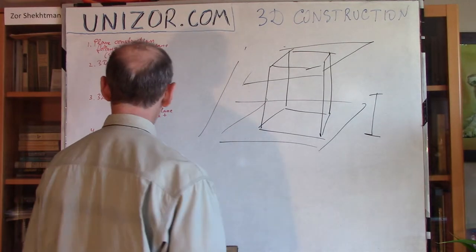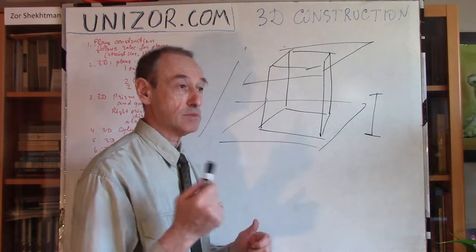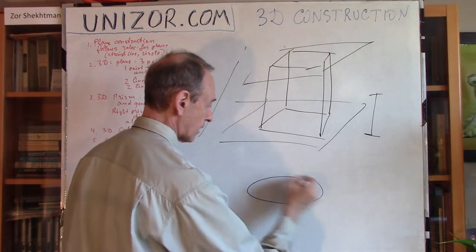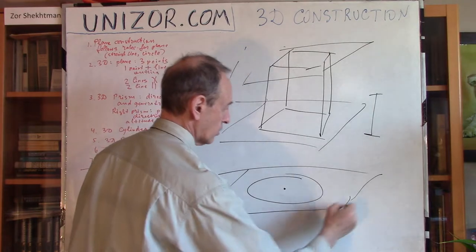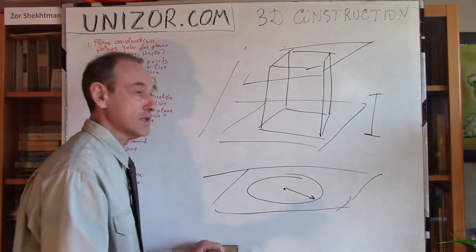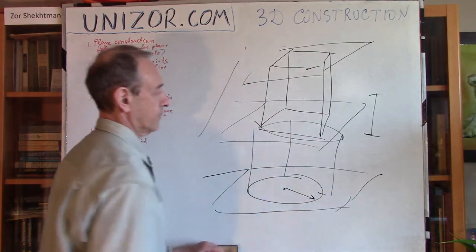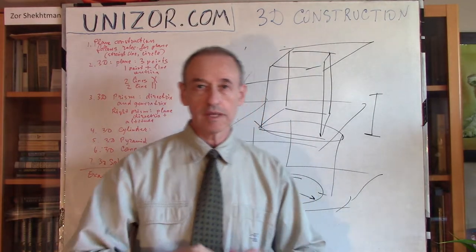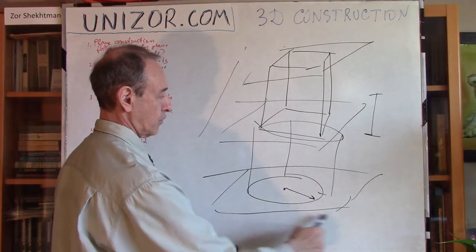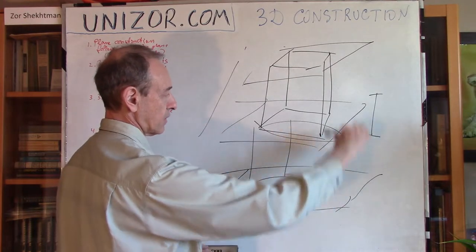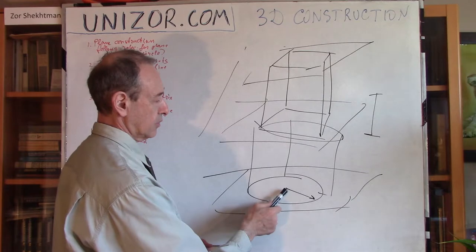Next is a cylinder. What do I have to know about a cylinder? Again, I have to know the directrix. The directrix of a cylinder is a circle, so I have to know the center — a point on the plane where the circle belongs — and the radius. If I know this, I consider my circle defined. And if it's a right cylinder, I have to know its height, and I can build it in my imagination. The sufficient condition is: a plane where the base is located, the distance between the two base planes (which is the height of the cylinder), and the location of the base circle, defined by its center and radius.